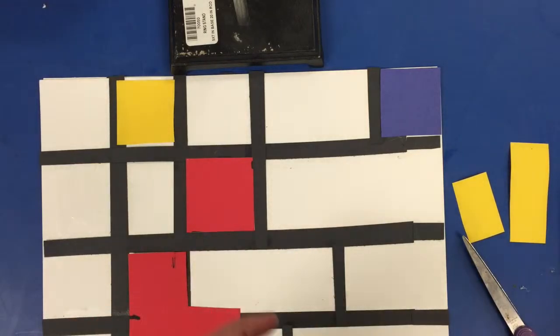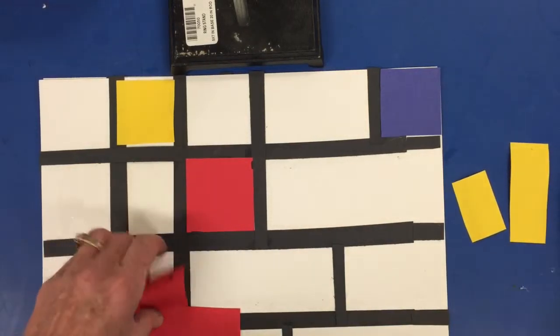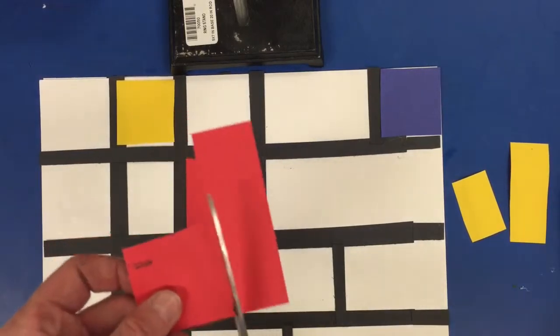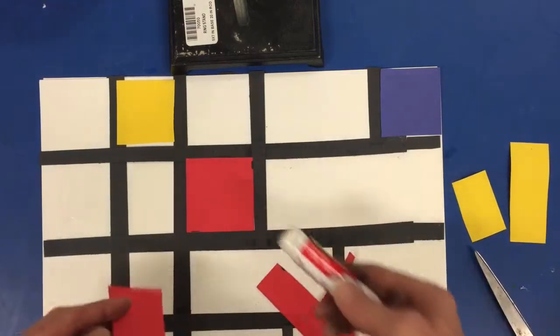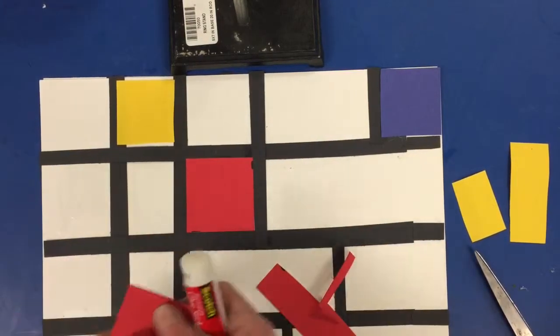Making a little bit of a line, and then cutting your rectangle into that shape that's going to fit in your square that you've created with your black grid.